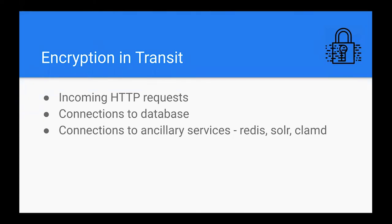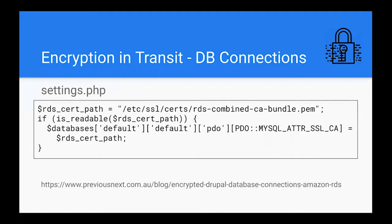In Drupal land, we've got connections coming into the app from the outside — those are your browser requesting index.php. The other type is Drupal making connections out, covering ancillary services inside your cluster — that might be Redis, Solr, ClamAV, things like that. We're running on Amazon RDS for our databases, and there are a really neat couple of lines in settings.php that will encrypt your database connection — Drupal talking to your database, fully TLS. There's a blog post where I go into more detail about how to set it up and add the keys to your container images. That's a really low-hanging piece of fruit.